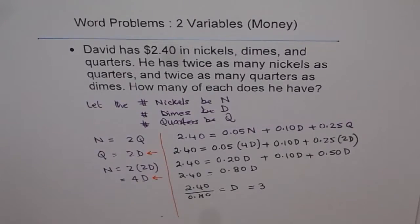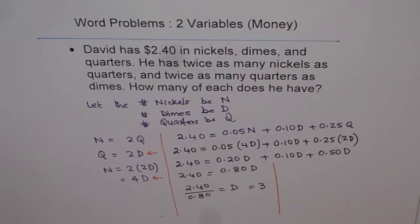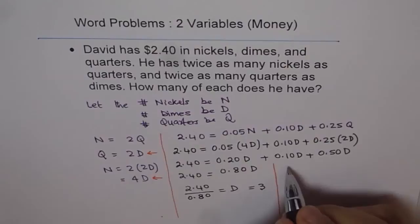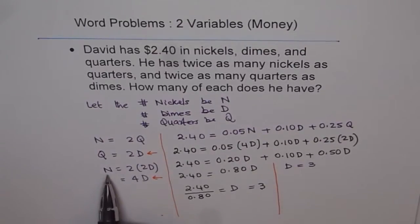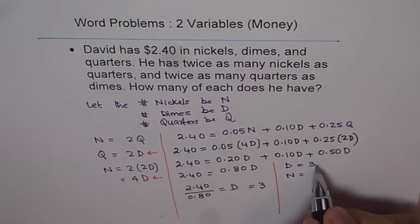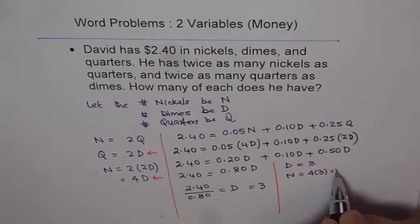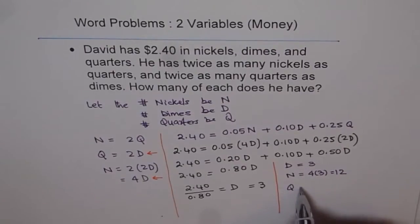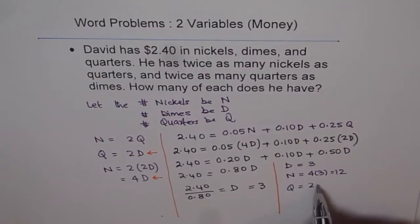Now if we know the number of dimes, we can write down how many other coins there are. We know D equals 3. Nickels should be 4 times dimes, so N is 4 times 3 which is 12. And quarters are 2 times the number of dimes, so 2 times 3 which is 6.